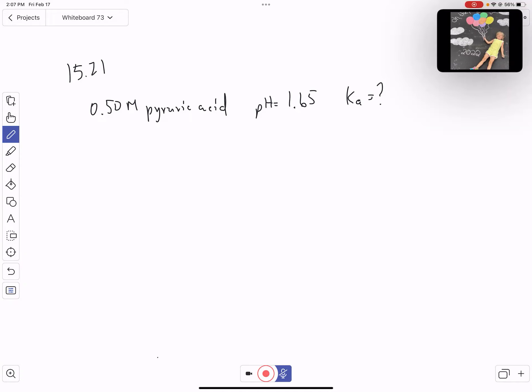We start with Ka equals the concentration of hydronium times the concentration of the conjugate base all over the concentration of the acid. Right now, we only know HA, which is 0.5 molar.